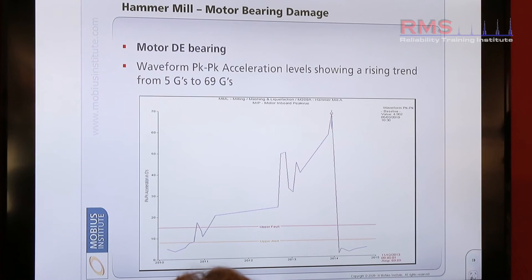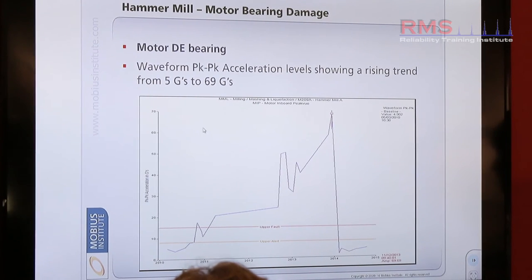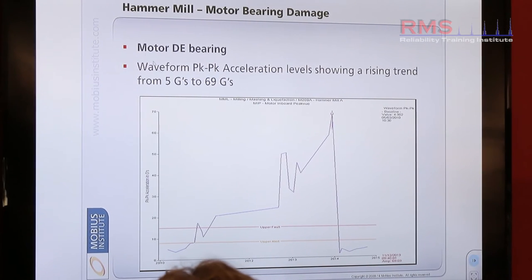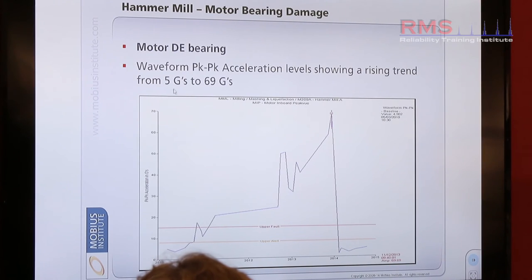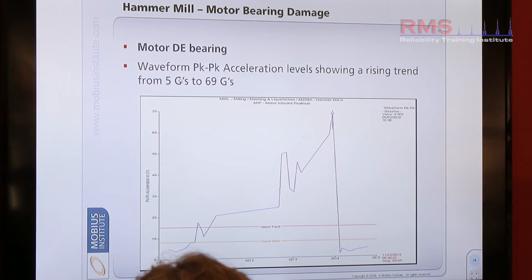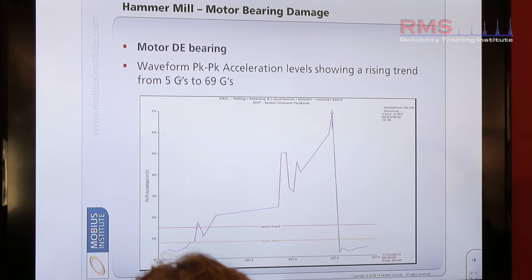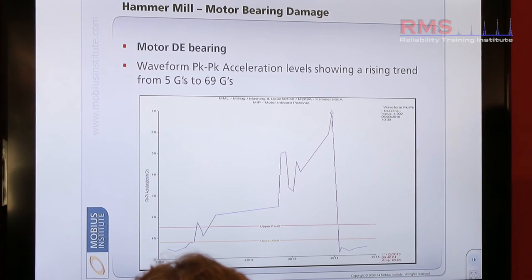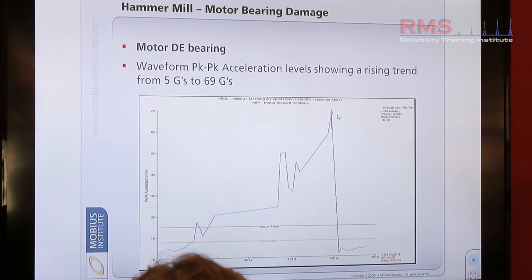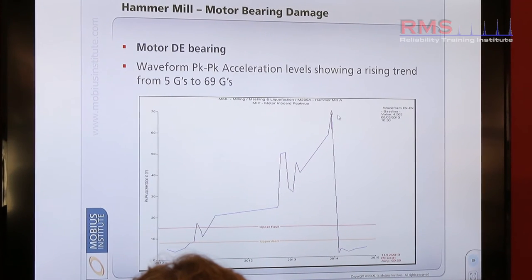Where at the baseline — the first measurement taken here — it's 5G. That's kind of quite reasonable. It's a peak-to-peak measurement of the shock of the signal up to 70 Gs. You can see the degradation there is up to 70 Gs.